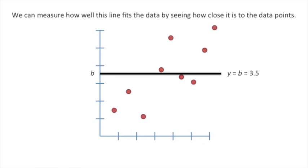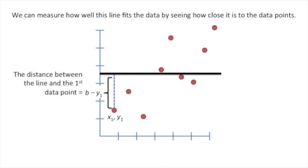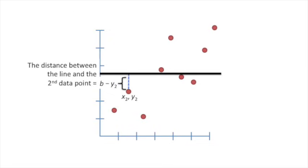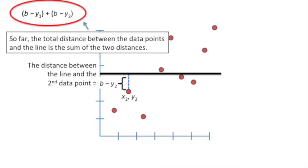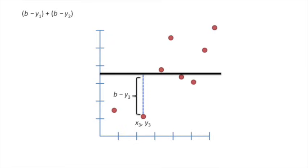We can measure how well this line fits the data by seeing how close it is to the data points. We'll start with the point in the lower left-hand corner of the graph with coordinates x1, y1. We can now draw a line from this point up to the line that cuts across the average y value for this data set. The distance between the line and the first data point equals b minus y1. The distance between the line and the second data point is b minus y2.